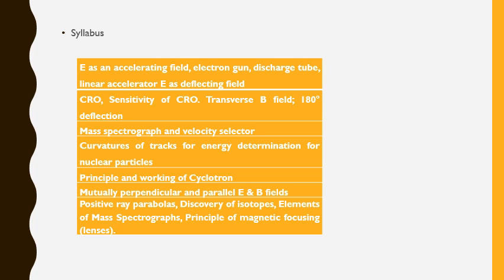In this unit, we will learn acceleration by electric field — what happens when we put charged particles parallel or perpendicular to the electric field — then application of magnetic field in various directions of charged particles. We will study how to select velocities for isotopes, the method to separate isotopes, the spectrograph, the electron gun, how the electron accelerates in the gun, then the CRO (cathode ray oscilloscope) and its functioning, then the mass spectrograph, then accelerators. Many applications we will study in this unit.